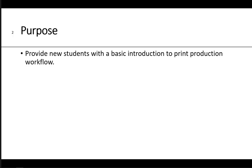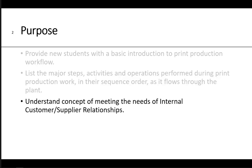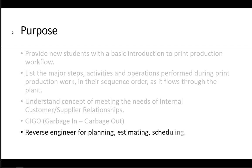The purpose of this presentation is to provide new students with a basic introduction to print production workflow. I want to list the major steps, the activities, and the operations performed during print production work in their sequence order as it flows through the plant. We want to understand concepts of meeting the needs of internal customer-supplier relationships. You often hear about GIGO — garbage in, garbage out. And we want to discuss reverse engineering for planning, estimating, and scheduling.